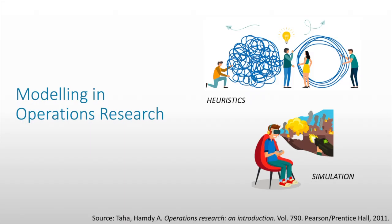For example, in different scheduling problems, one heuristic would be to schedule first those with the shortest processing time — that is a heuristic. Simulation models are digital representations which imitate the behavior of a system using a digital computer. The statistics describing the different measures of performance of the system are accumulated as the simulator advances on the computer.